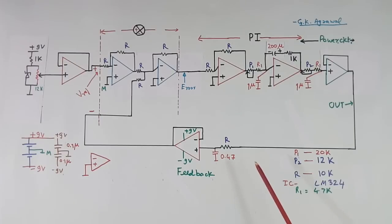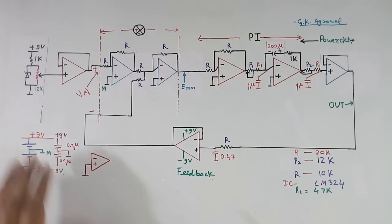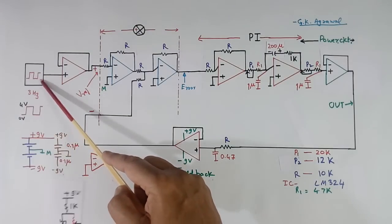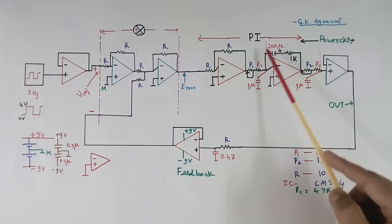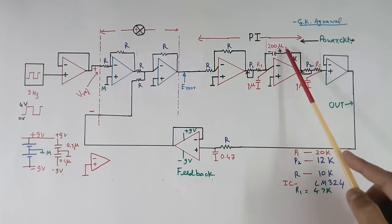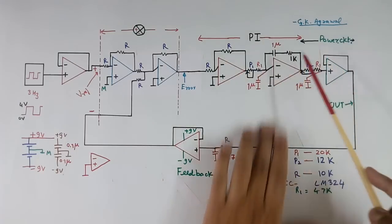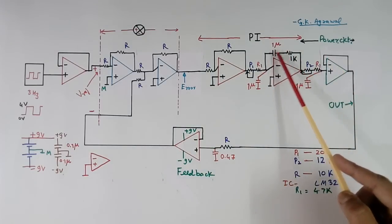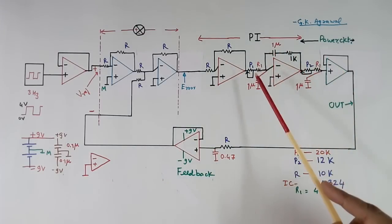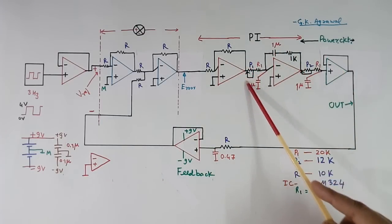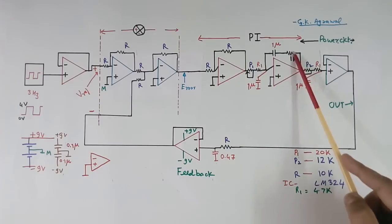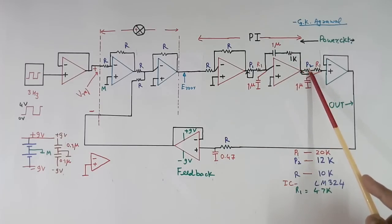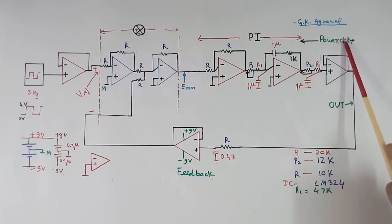For seeing transient time using CRO, I made two changes. One is the reference was connected with a function generator. And second, this capacitor — which is electrolytic, 200 microfarad, plus here, minus here — is changed to a 1 microfarad capacitor. This potentiometer was used to control the time of this PI, and this potentiometer was used to control the response of the power circuit.